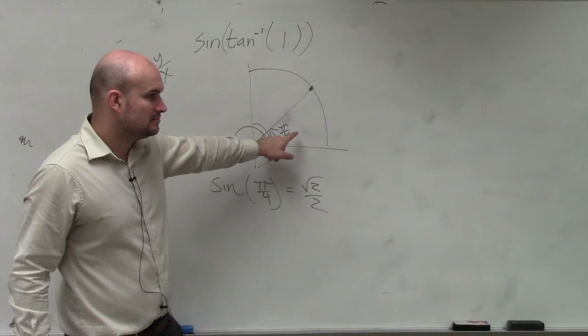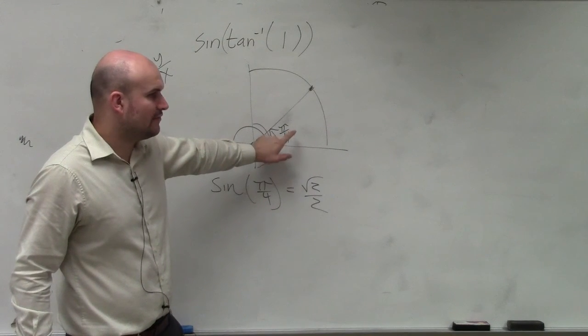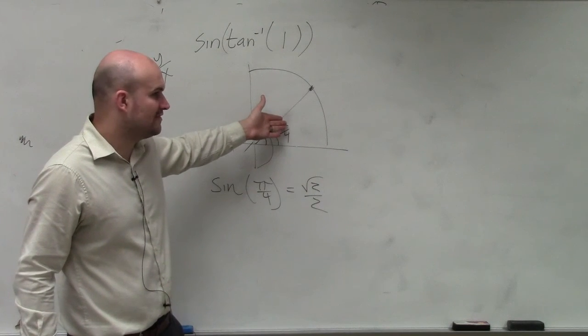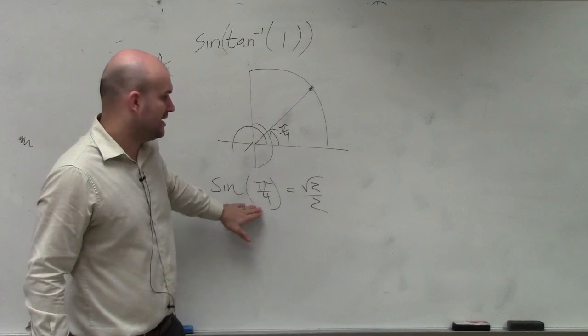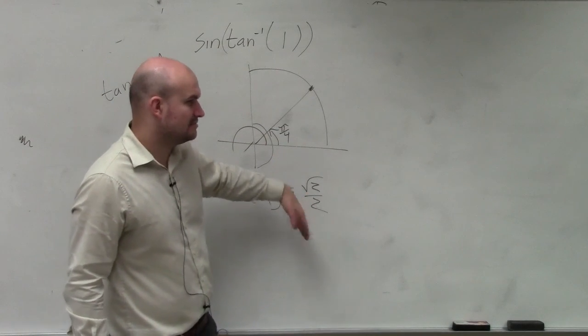Do you have to do that? We're going to be using pi over 4. But it's the same thing as 45 degrees. Does that make sense? Is that where you got lost?